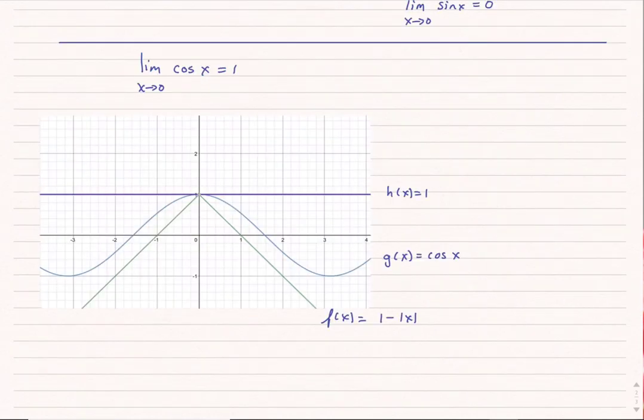In a similar fashion, we could find that the limit as x approaches 0 of cosine of x is equal to 1. The two functions I'd use in this case are f(x) is 1 minus the absolute value of x, and h(x) is equal to 1. And we would do the same thing about sending those limits as x approaches 0. We would find that the limit of h(x) as x goes to 0 is 1, and the limit of f(x) as x goes to 0 is also 1. Therefore, by the squeeze theorem, the limit of g(x) as x approaches 0 is also 1.